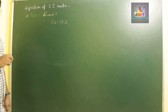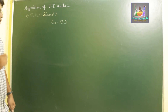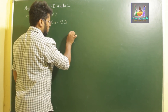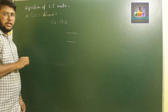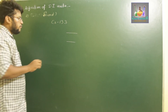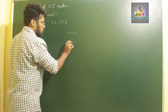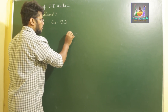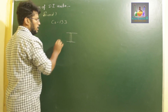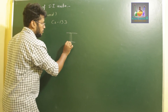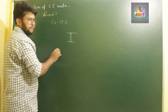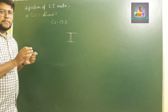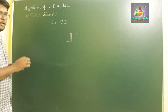Cesium-133 has very fine spectral lines in its ground state. If the radiation present in the ground state makes a transition — a jump from one level to the other level — that transition takes a certain amount of time, and that specific time is called a second.